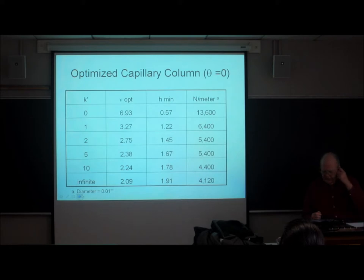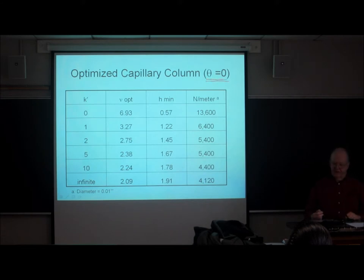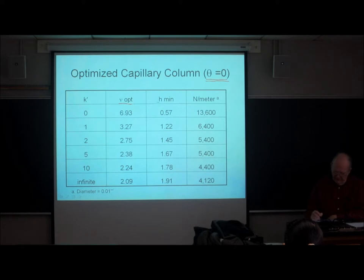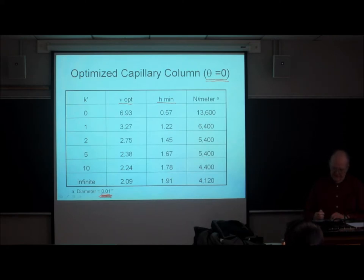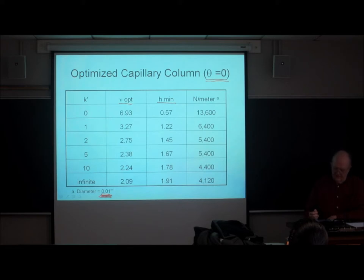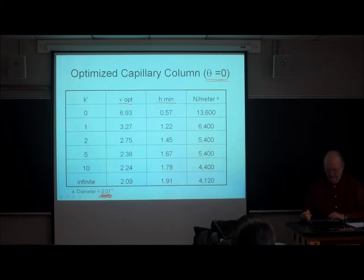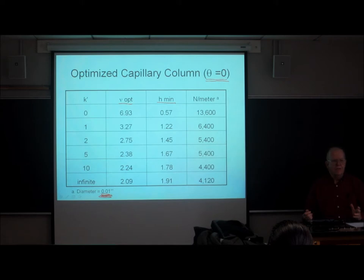This is a quantitative statement of what was shown graphically. For the specific case of an infinitely thin film of stationary phase, as the retention factor gets bigger, the optimum velocity goes down and the minimum plate height goes up. The reduced plate height at the minimum in gas chromatography is going to be about one to two with a decently coated, well-prepared column — about two times the radius of the tube.